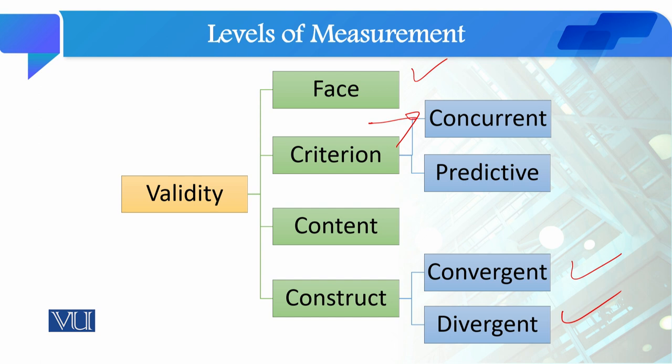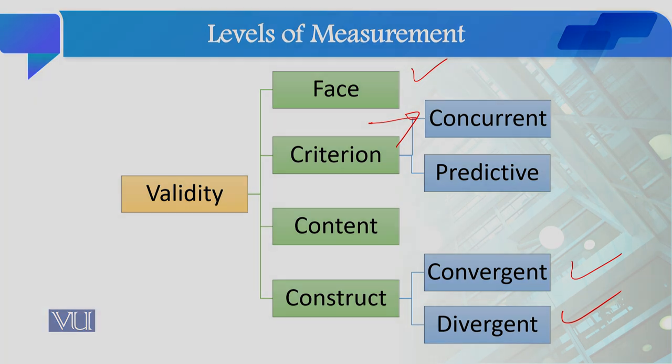تو ہم جو next module ہے اس میں ان types of validity کی بات کریں گے detail میں — کہ face validity کیا ہے، criterion validity کیا ہے، content validity کیا ہے، اور construct validity کیا ہے۔ ان کو ہم one by one اپنے upcoming module میں discuss کریں گے۔